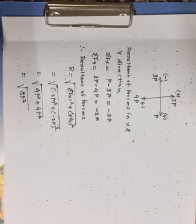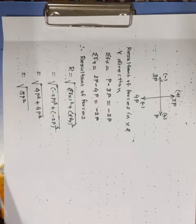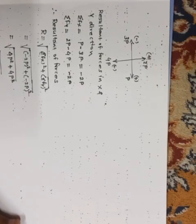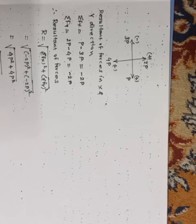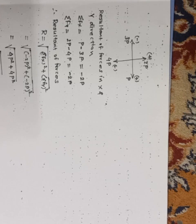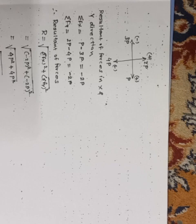So, if you take out, or if you take a root of 8, you will get R equals to 2.82P. So, this is the resultant.